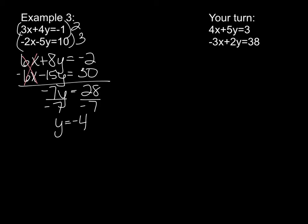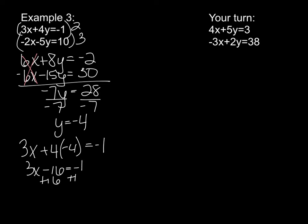Plugging y equals negative 4 back in: 3x plus 4 times negative 4 equals negative 1. You should get the same answer regardless of which equation you choose. So 3x minus 16 equals negative 1. Adding 16 to both sides: 3x equals 15, so x equals 5. The solution is (5, -4).